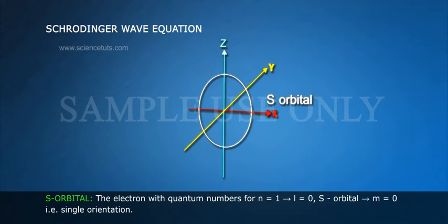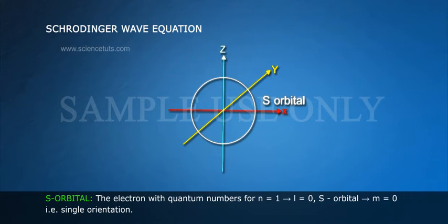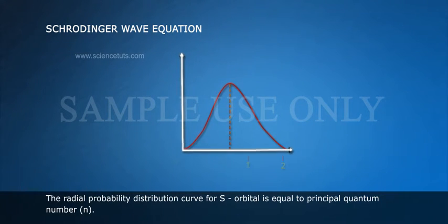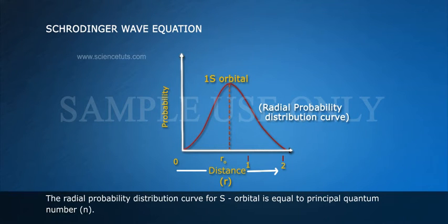S orbital. The electron with quantum numbers for n is equal to 1, l is equal to 0, S orbital, m is equal to 0, that is single orientation. The radial probability distribution curve for S orbital is equal to principal quantum number n.